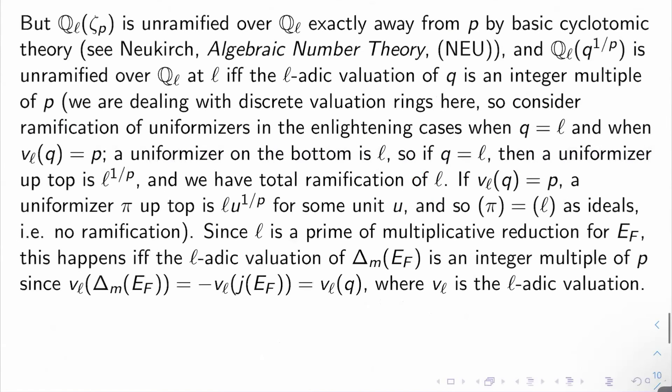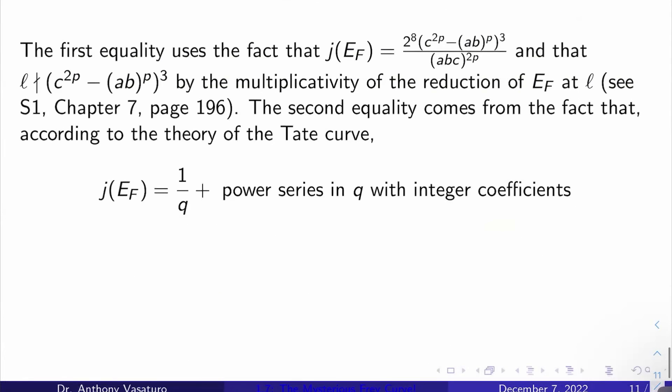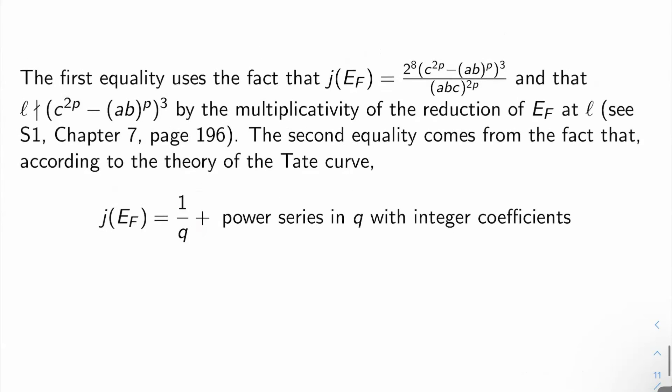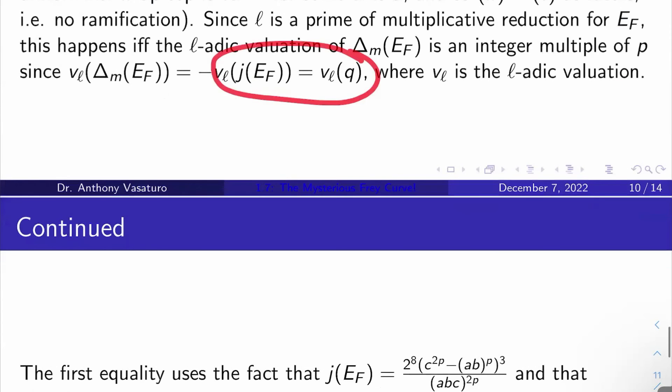How about the second equality here? Why is this true? That comes from Tate uniformization. By the theory of the Tate curve, we know the j-invariant of the Frey curve is 1/q plus a power series in q with integer coefficients. Well, that says exactly that this is true. Perfect.